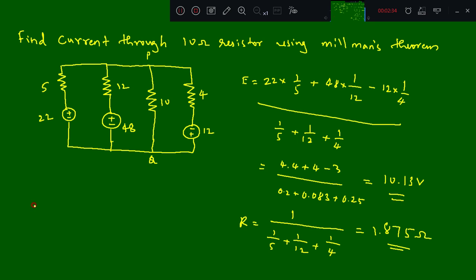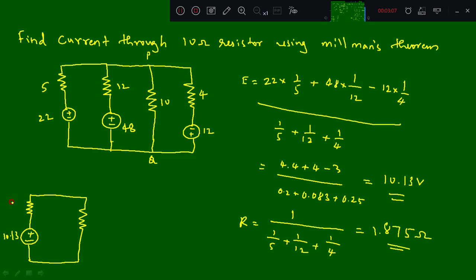The reduced circuit form is: the equivalent voltage source of 10.13 volts in series with the equivalent resistor of 1.875 ohms, and then the 10 ohm resistor connected to it.